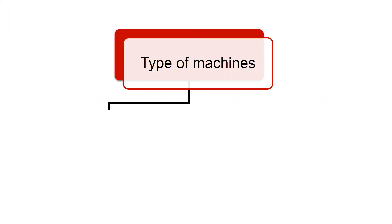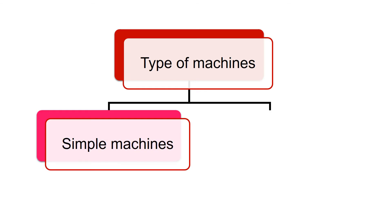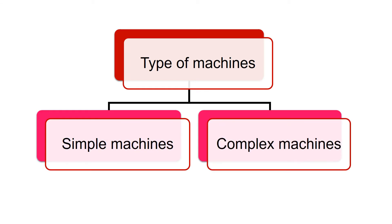Machines are of two types: simple machines and complex machines. Let's study these machines one by one.